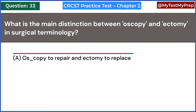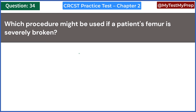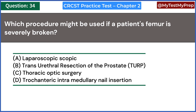What is the main distinction between -oscopy and -ectomy in surgical terminology? A. -oscopy to repair, -ectomy to replace. B. -oscopy to reduce, -ectomy to enlarge. C. -oscopy to look at, -ectomy to remove. D. -oscopy to remove, -ectomy to look at. Answer: C. -oscopy to look at, -ectomy to remove. Which procedure might be used if a patient's femur is severely broken? A. Laparoscopic. B. Transurethral resection of the prostate (TURP). C. Thoracic optic surgery. D. Trochanteric intramedullary nail insertion. Answer: D. Trochanteric intramedullary nail insertion.